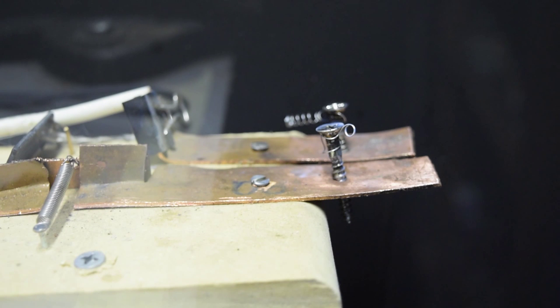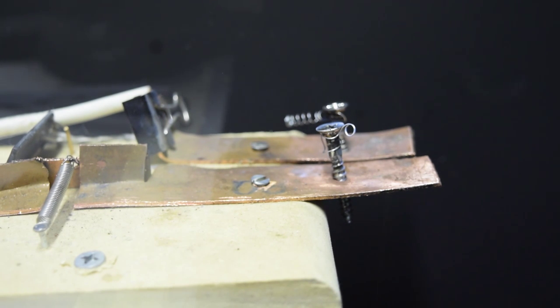Now that was all the energy in that capacitor bank being released, and it melted the spring. It actually caused the steel to burn, and those sparks just erupted everywhere. Now I'll reset and show some different objects being exploded.